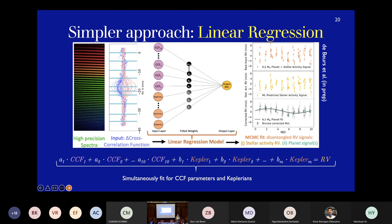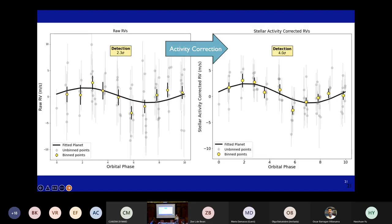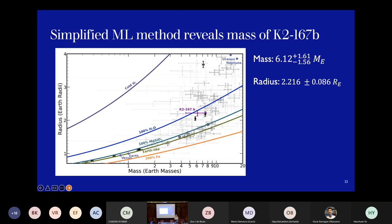And so what we find for this kind of simplified approach is that it does relatively well. So before applying any kind of correction, you get about a 2.3 sigma detection. And then after applying the stellar activity correction and removing it, we get about a 4 sigma detection. And this agrees with the transit period and everything as well. Let me go back for a second. So this is the actual mass that we retrieved from this. And so this kind of simplified method was able to find this mass that was previously hidden by stellar activity.